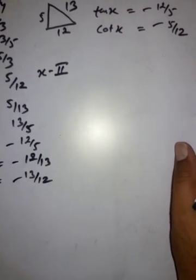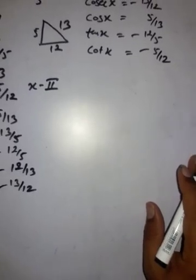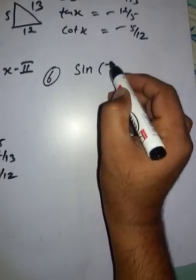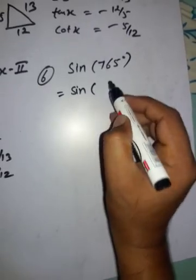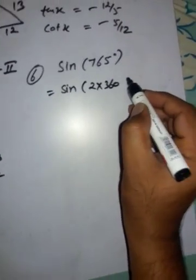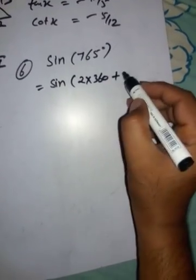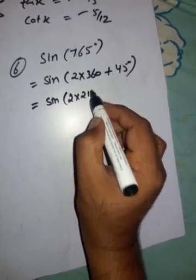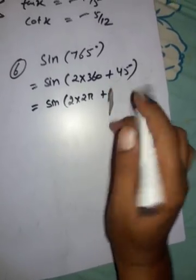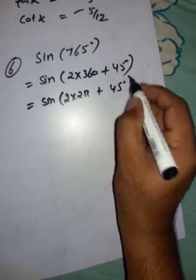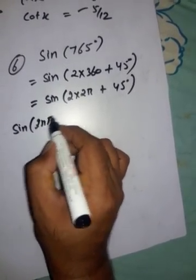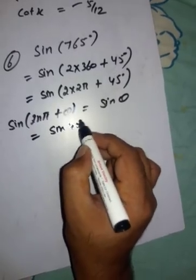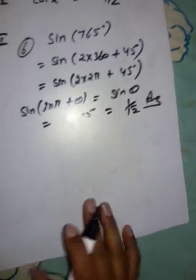From question 6 to 10 we find the values of trigonometric functions. Question 6: sin 765°. We write 765° = 2×360° + 45°, which is of the form 2nπ + θ. Using the identity sin(2nπ + θ) = sin θ, we get sin 45° = 1/√2. That is our answer.